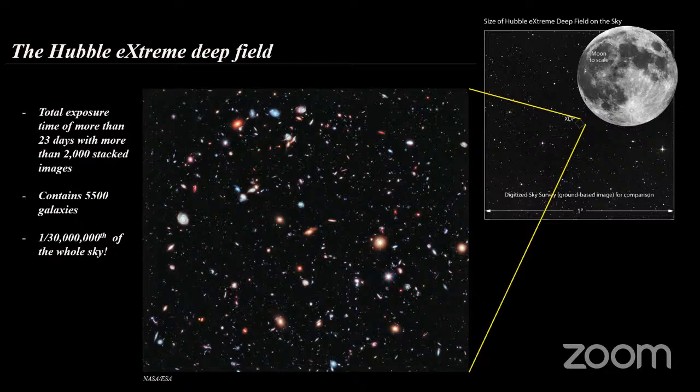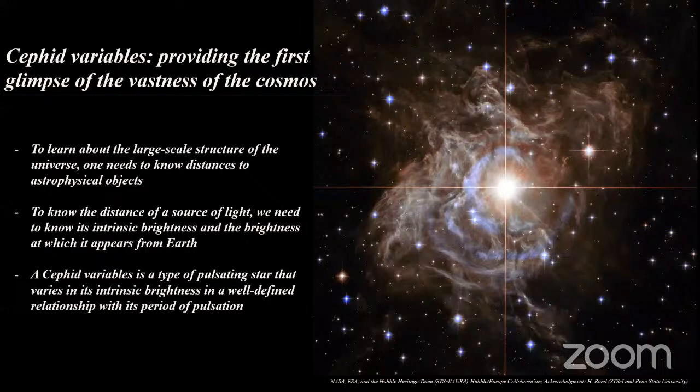And that times 30 million — just how vast our universe is. That makes us ask the question: how did it all begin? A very important tool that helped us truly get the first view of just how vast our cosmos are and how they are truly dynamic is a type of stars called Cepheid variables.